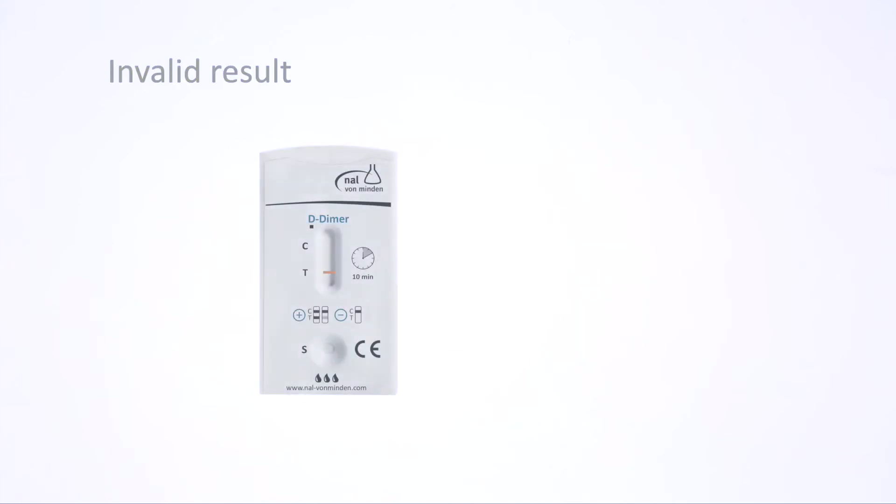The control line signifies that the test has performed correctly and should always be present. If no control line appears, the result is invalid. Repeat the test with a new test device.